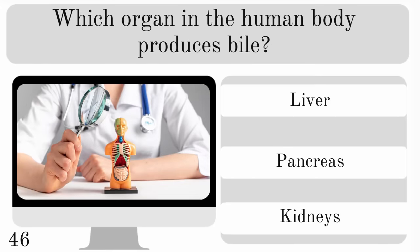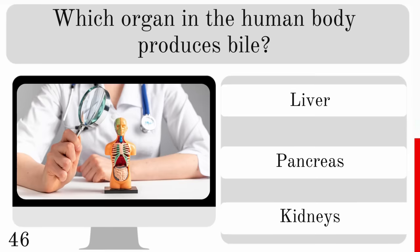Which organ in the human body produces bile? Is it the liver, pancreas or kidneys? And if you are thinking gallbladder, it's only stored there — it's produced in the liver.